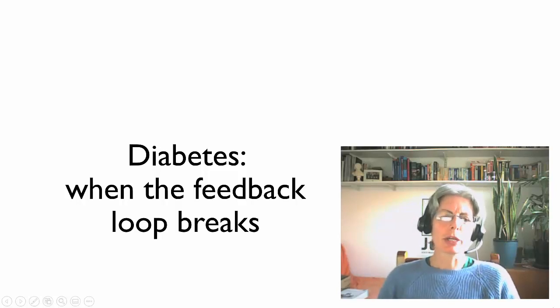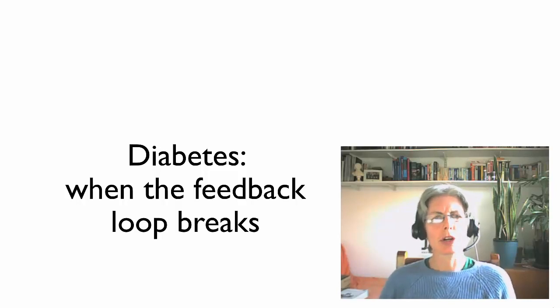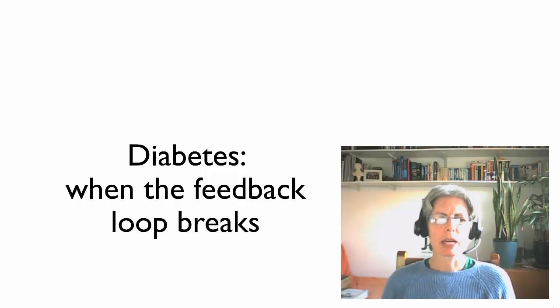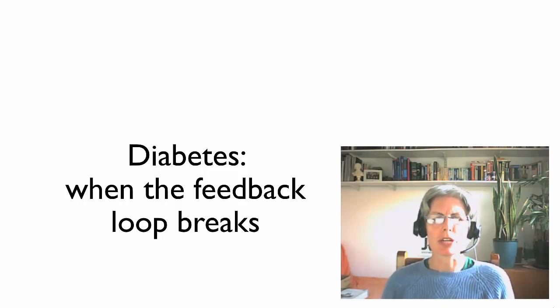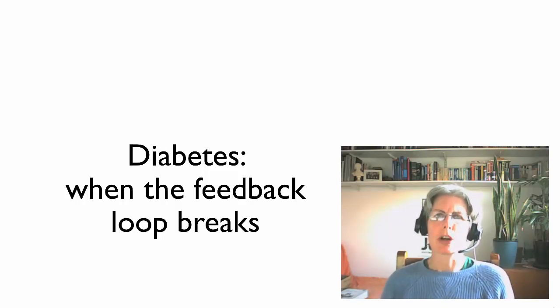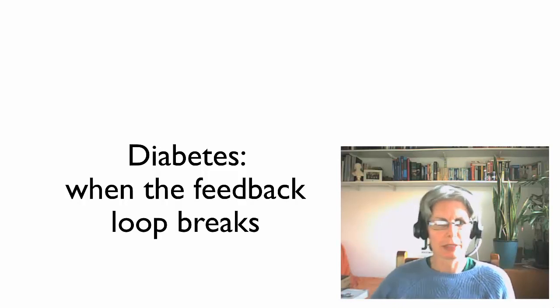In this video, we're going to have a quick look at what can go wrong when a negative feedback loop breaks. Our example is going to be the disease diabetes, which occurs when the homeostasis of blood sugar no longer works properly.